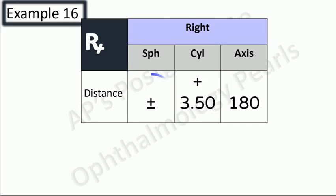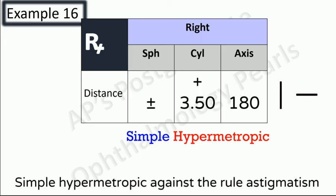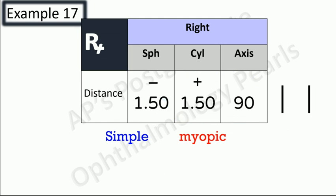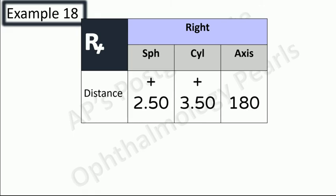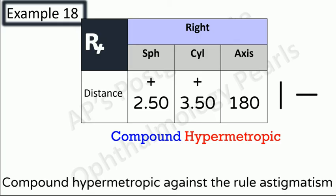Example fifteen: sphere is zero so simple; sign of cylinder is plus so hypermetropic; both lines in different directions so against-the-rule — simple hypermetropic against-the-rule astigmatism. Example sixteen: sphere is present, signs are different, sphere is same as cylinder so simple; sign of sphere is minus so myopic; both lines in same direction so with-the-rule — simple myopic with-the-rule astigmatism. Example seventeen: sphere has a number, signs are the same so compound; sign is plus so hypermetropic; lines in opposite directions so against-the-rule — compound hypermetropic against-the-rule astigmatism.